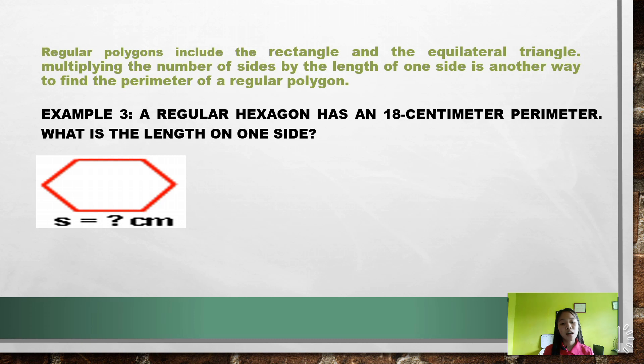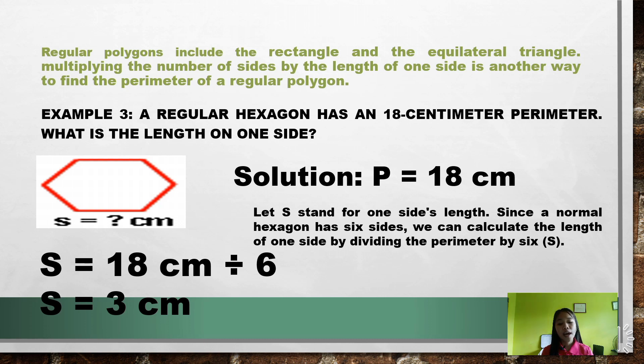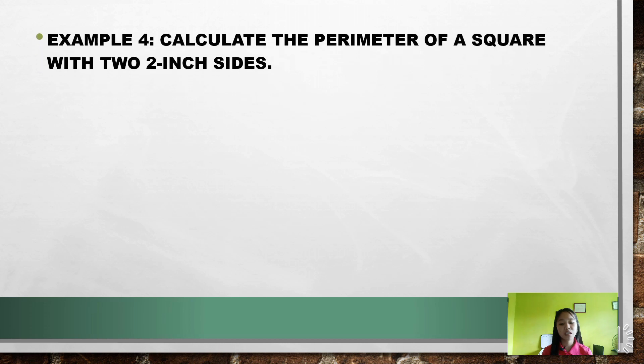Example number 3: A regular hexagon has an 18 centimeter perimeter. What is the length on one side? P equals 18 centimeters, and let S stand for one side's length. Since a normal hexagon has 6 sides, we can calculate the length of one side by dividing the perimeter by 6. So S = 18 cm ÷ 6, which gives us S = 3 centimeters. One side of the hexagon is 3 centimeters.